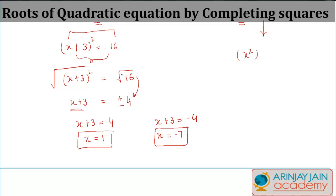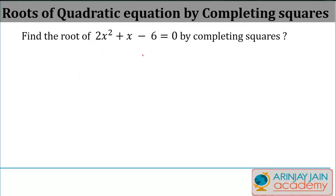But this was a simple case where squares were already given. How about a situation when these things are not given to you? There are certain steps that need to be followed. Find the root of 2x² + x - 6 = 0 by completing squares.